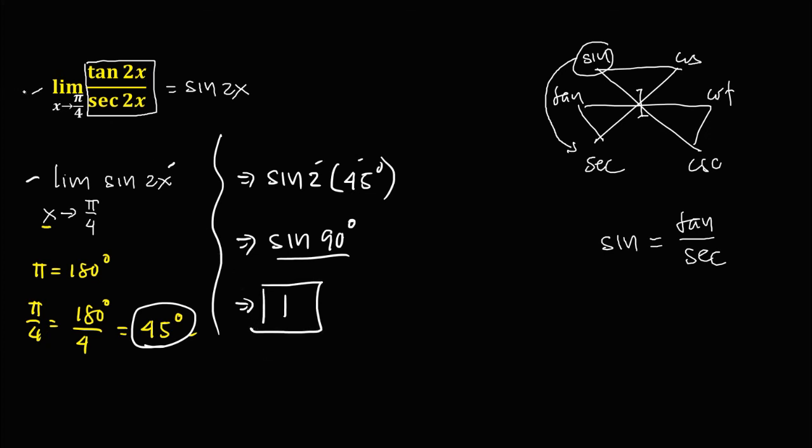So therefore, the limit of tangent 2x over secant 2x as x approaches to pi over 4 is equal to positive 1.